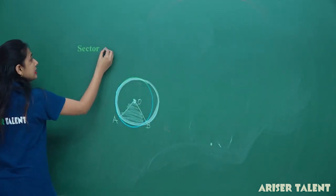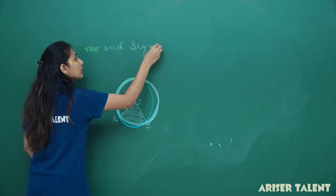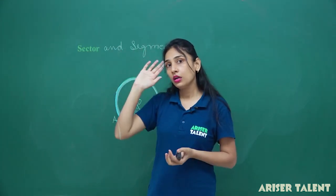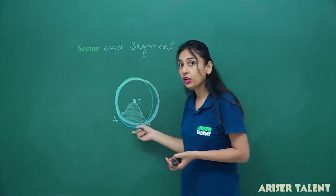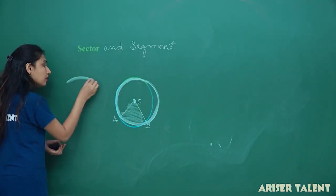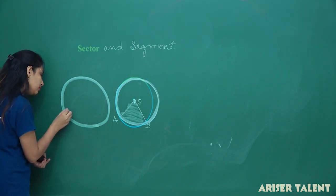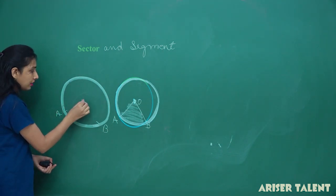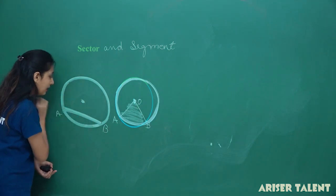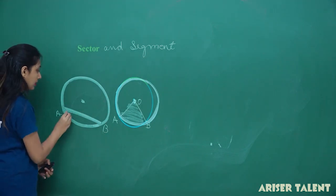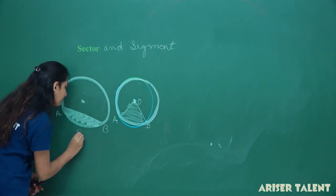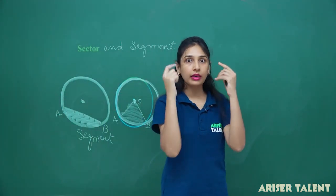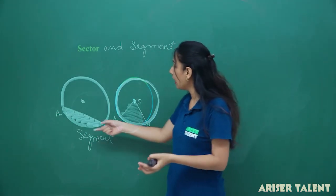We are having one more terminology: sector and segment. I inserted a picture of pizza so you can remind yourself — when you are taking a slice from pizza, that is your sector. The other thing is segment: if I am having two points A and B and I draw a line meeting point A to B, without involving the centre, that enclosed region is what? This is a segment.